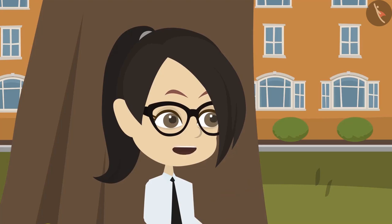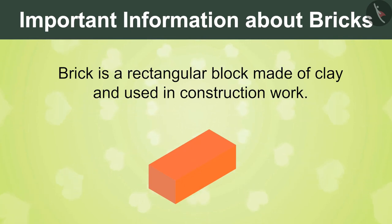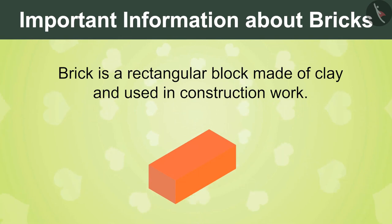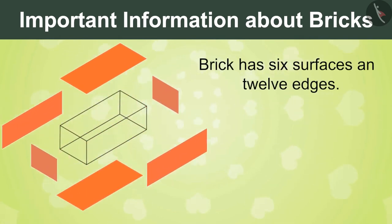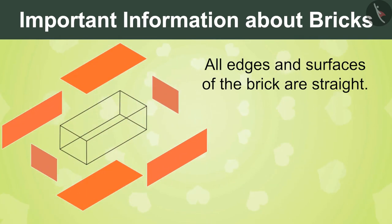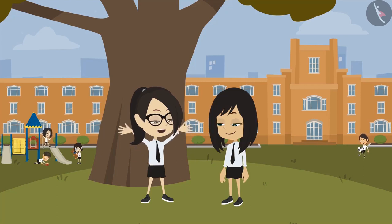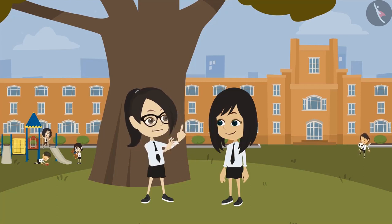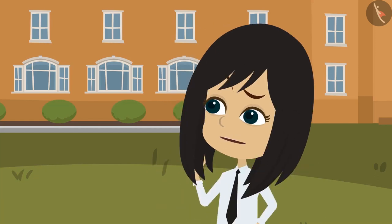Neha, I know all information about bricks now. Bricks are made by baking clay and are used for construction work. A brick is in the shape of a cuboid — it has 6 surfaces and 12 edges, and all edges and surfaces are straight. But the real fun would be to make something with them. Vandana, where can I learn more about the uses of bricks? I would like to know more.